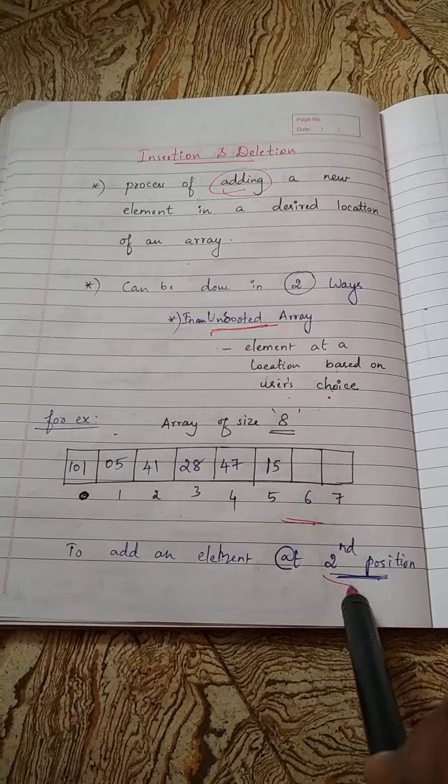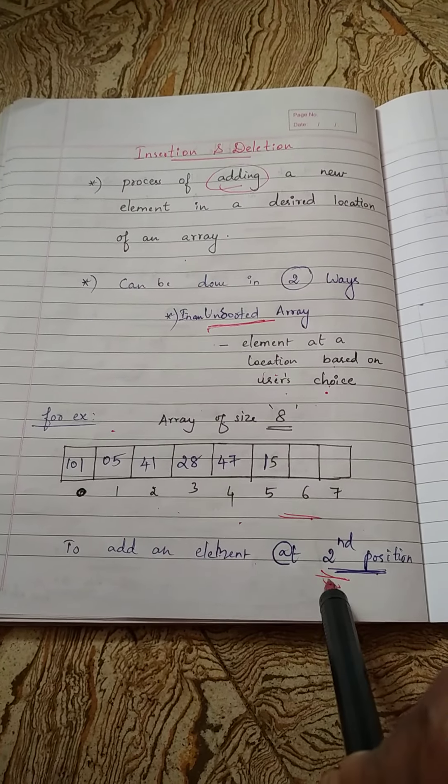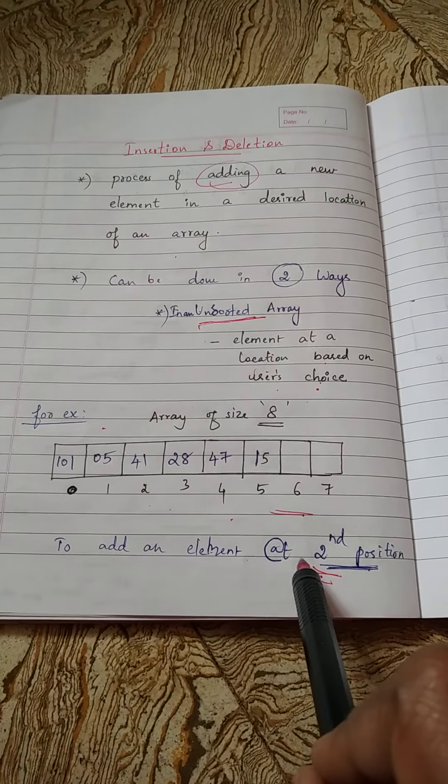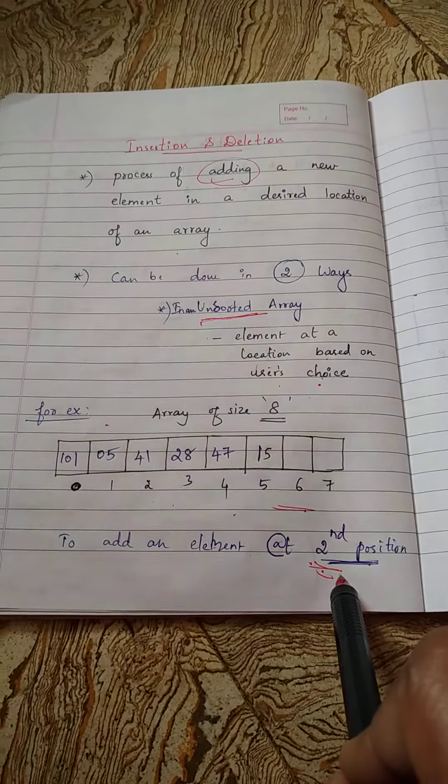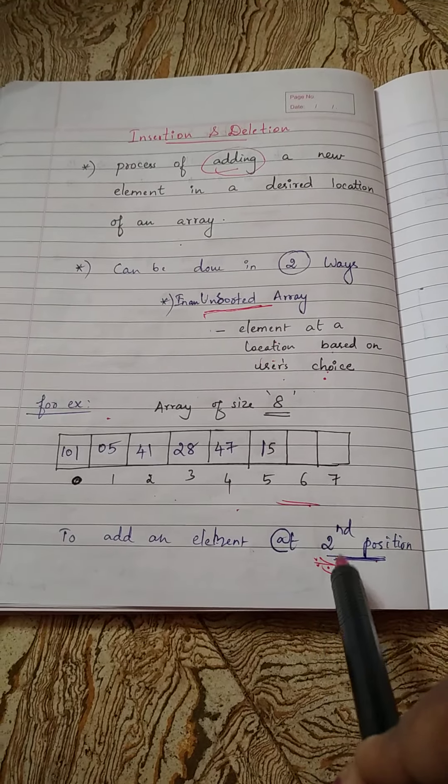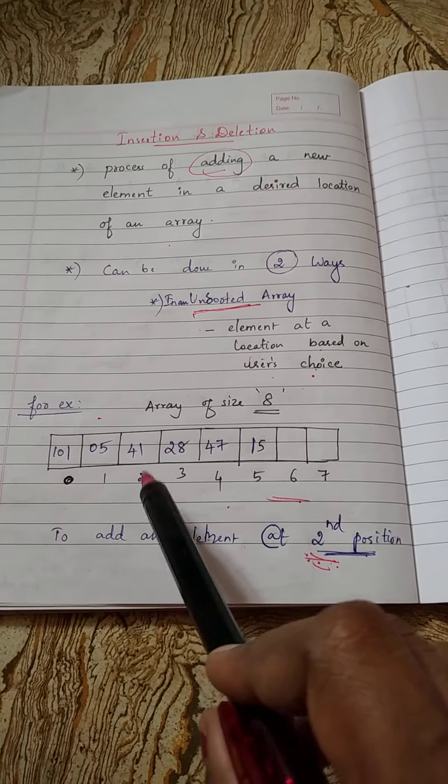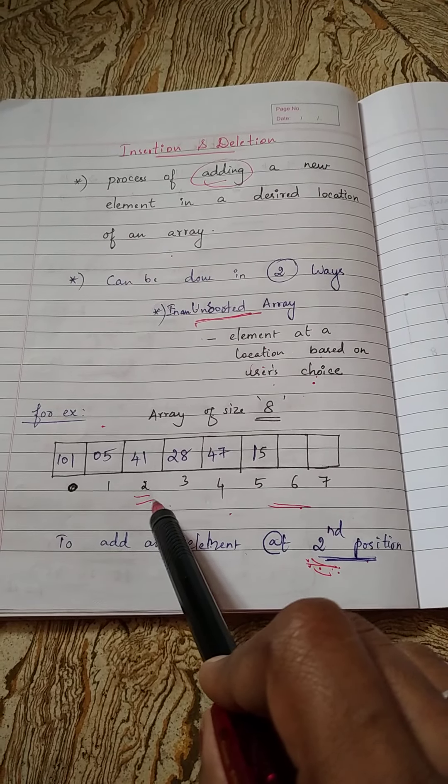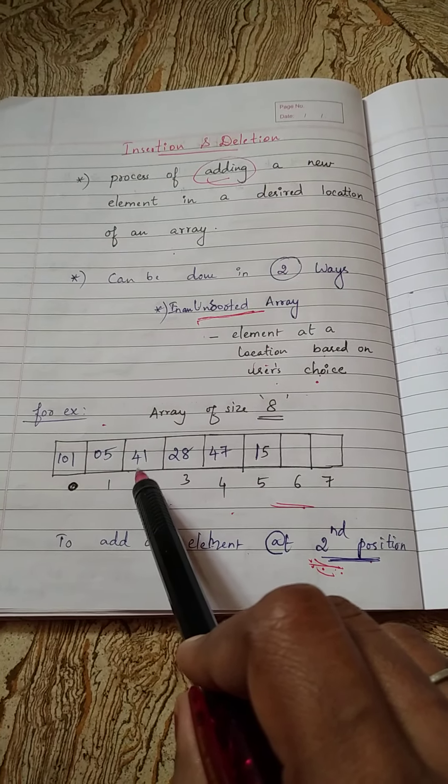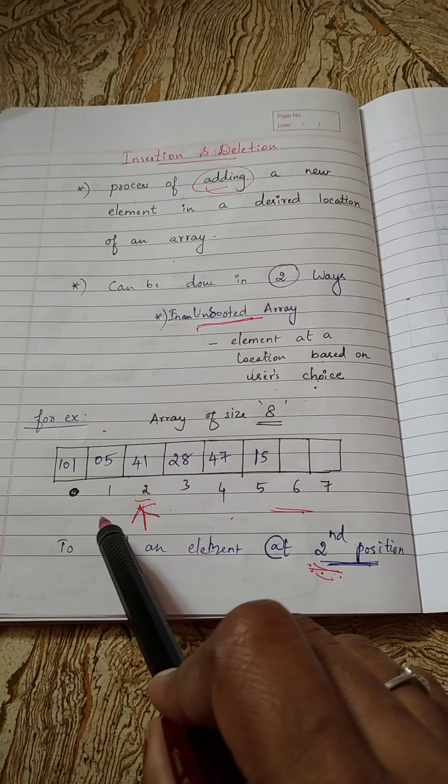This is the scenario: this is an unsorted array and you are getting a position to be added, position and also number to be added from the user. Now the user is telling you they want to add an element at second position. Now look at this array: in second position already you are having an element 41. Now how will you insert a new element in this position? If you directly insert,